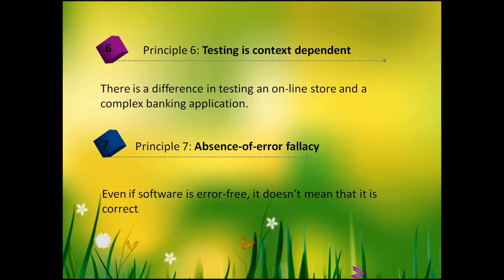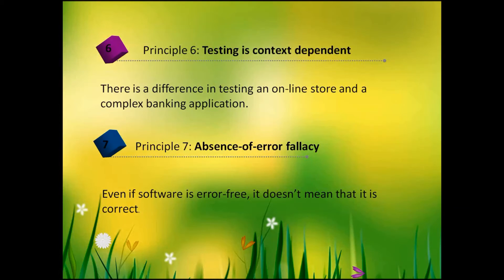The sixth principle: testing is context dependent. There is a difference between testing an online store and a complex banking application. A banking application should be tested more precisely, as mistakes in banking software can cause enormous harm to the business and economy. Also, banking applications are safety-critical software — there must be no chance that someone gains access to other people's accounts.